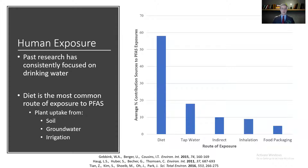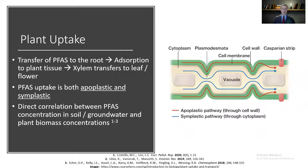What was probably the most surprising finding was that diet is actually the most common route of exposure to PFAS. There's been a lot of past research focused on drinking water, but it turns out diet is the most common route of exposure, likely due to agricultural uptake through the soil, groundwater, or irrigation water. For PFAS, plant uptake is both apoplastic and symplastic — that is, both through the cell wall and through the cytoplasm.